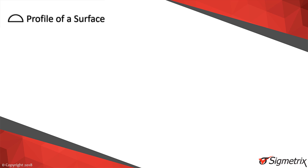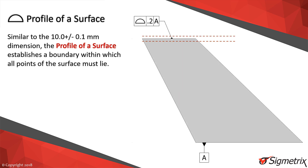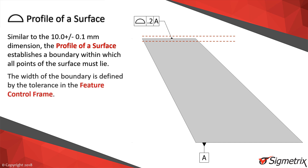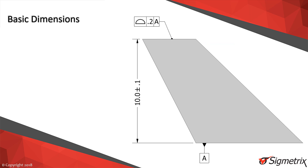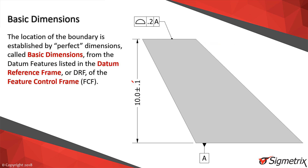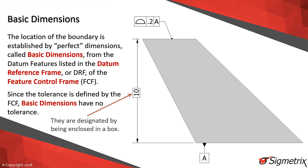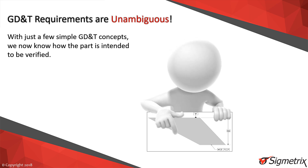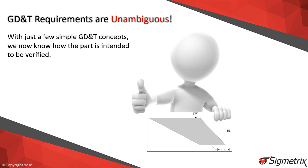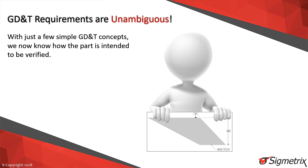The control we'll use to replace the plus or minus tolerance is a profile of a surface. Like the plus-minus tolerance, the profile of a surface establishes an inner and outer boundary within which the specified surface must lie. The distance between the two boundaries — 0.2 millimeters in this case — is specified in the feature control frame. Since the tolerance is established in the feature control frame, we remove the plus-minus tolerance from the dimension, put a box around it, designating it as a basic dimension used to locate and orient the boundaries with respect to the datum reference frame.